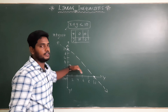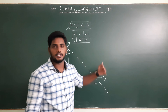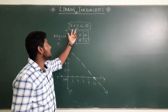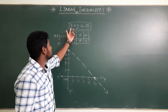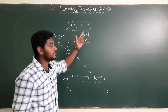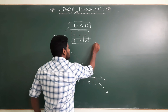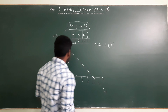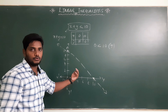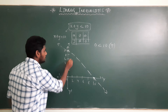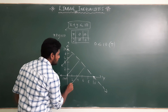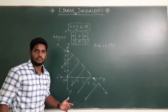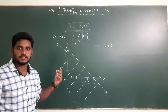Now how to find the region — whether it is this half-plane or the other. Substitute the checkpoint (0, 0): 0 plus 0 less than 10, which gives 0 less than 10 — that is true. True means we shade the region towards the checkpoint. That means the region containing (0, 0) is the solution region, as we did in previous classes.